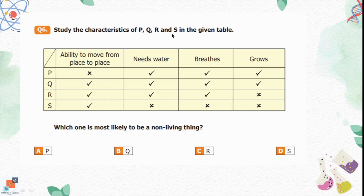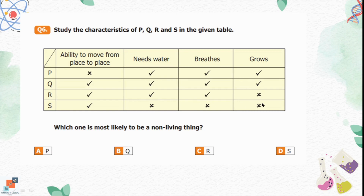Question number 6: Study the characteristics of P, Q, R, and S in the given table. P cannot move on its own but needs water, breathes, and grows — likely a plant, which is a living thing. Q can move, needs water, breathes, and grows — like a human being. R can move, needs water, breathes, but doesn't grow — it can still be a living thing, just not increasing in size. S can move but doesn't need water, doesn't breathe, and doesn't grow — so S is a non-living thing. Option D is correct: S is most likely a non-living thing.